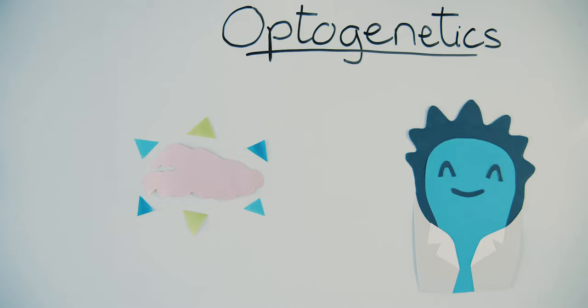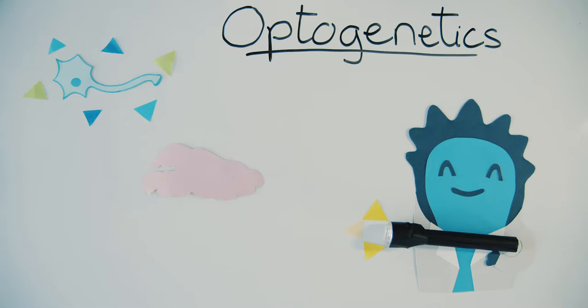Optogenetics has changed how neuroscientists study the brain. It provides a fast and precise method for controlling neurons using light. But how can light be used to control a neuron inside a functioning brain of a living organism?